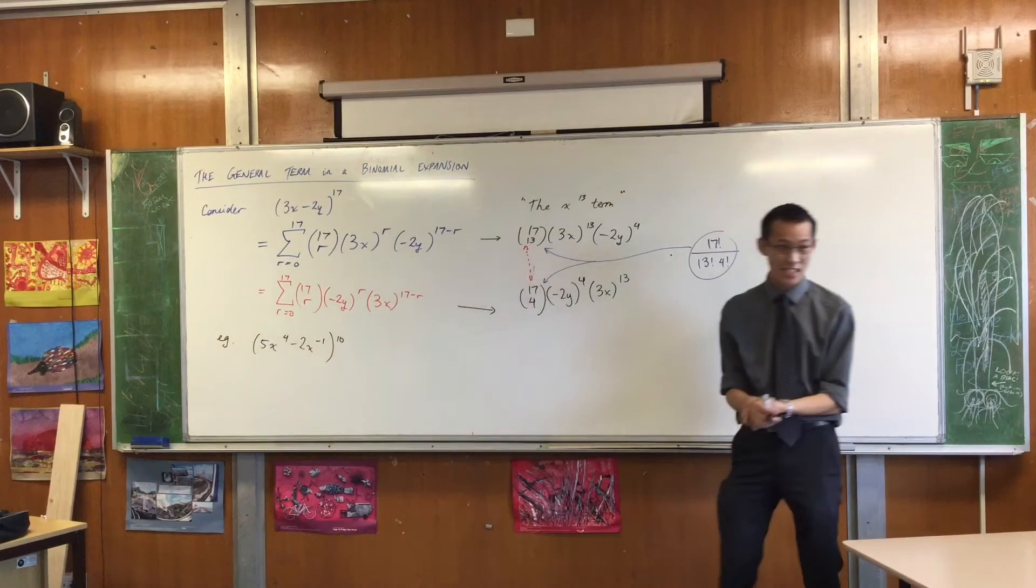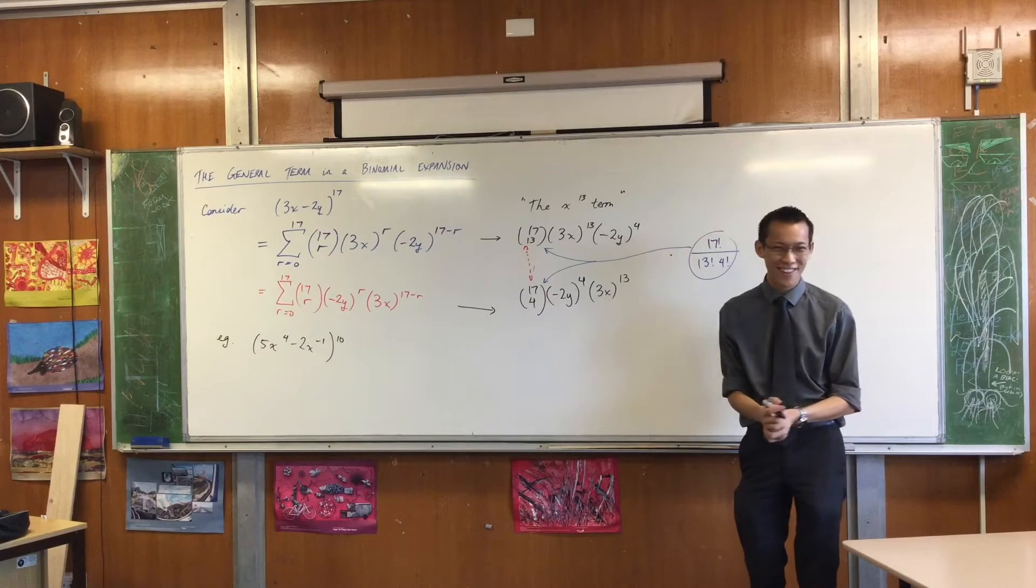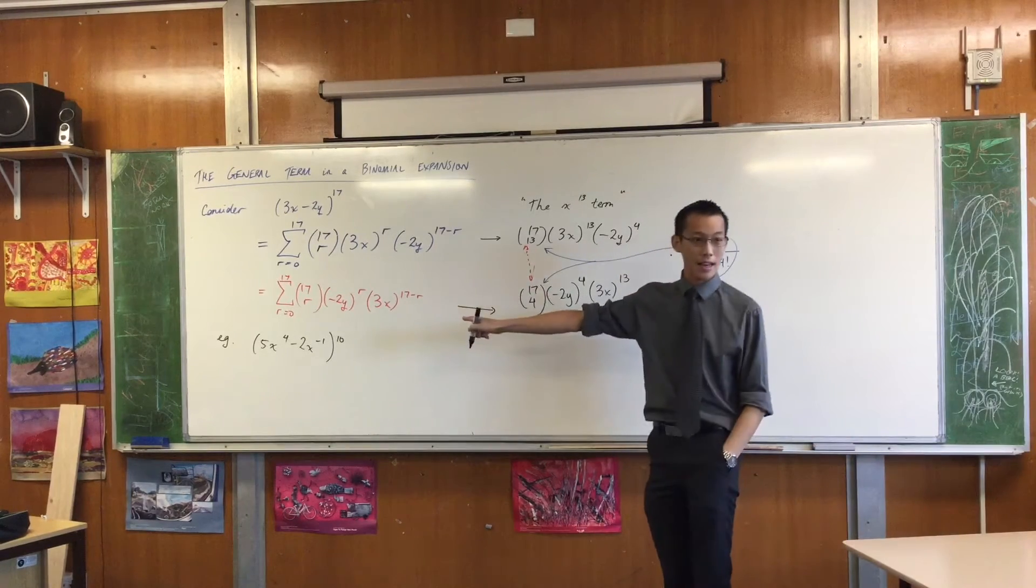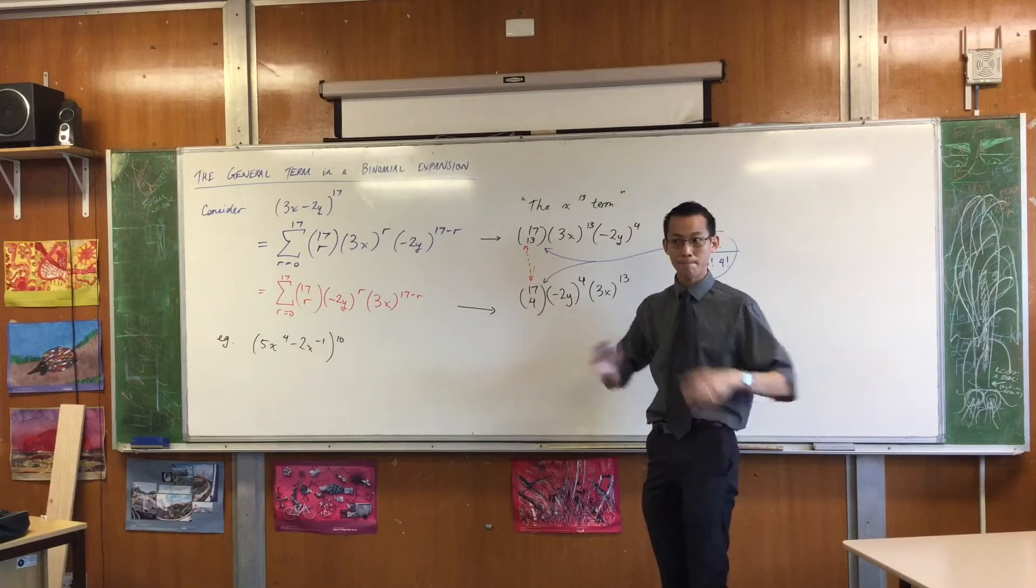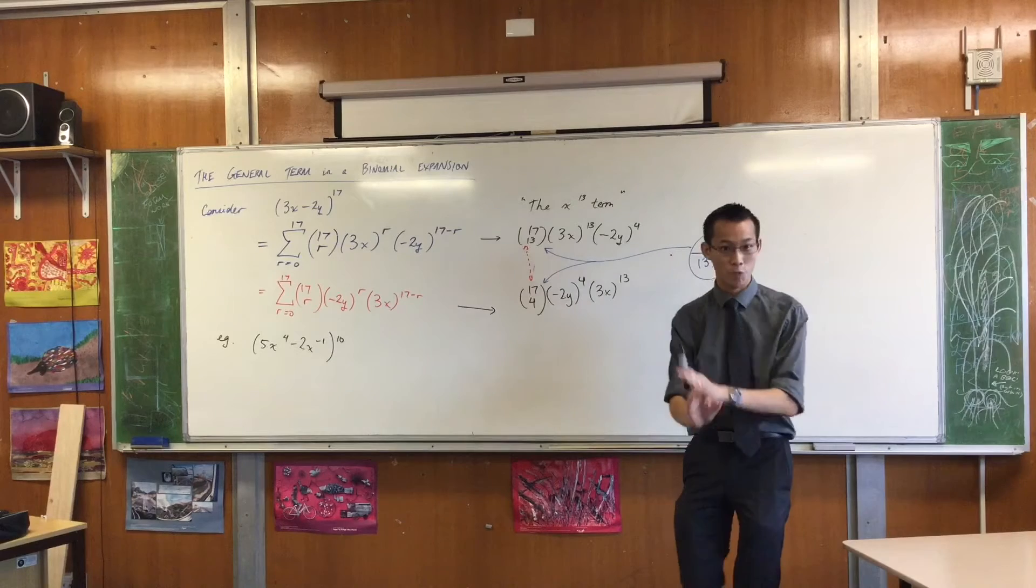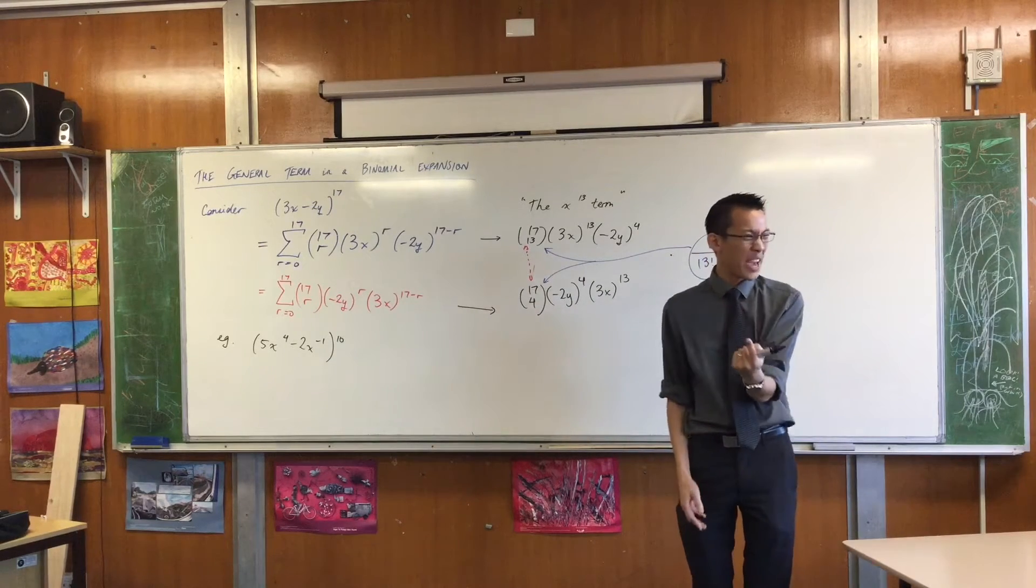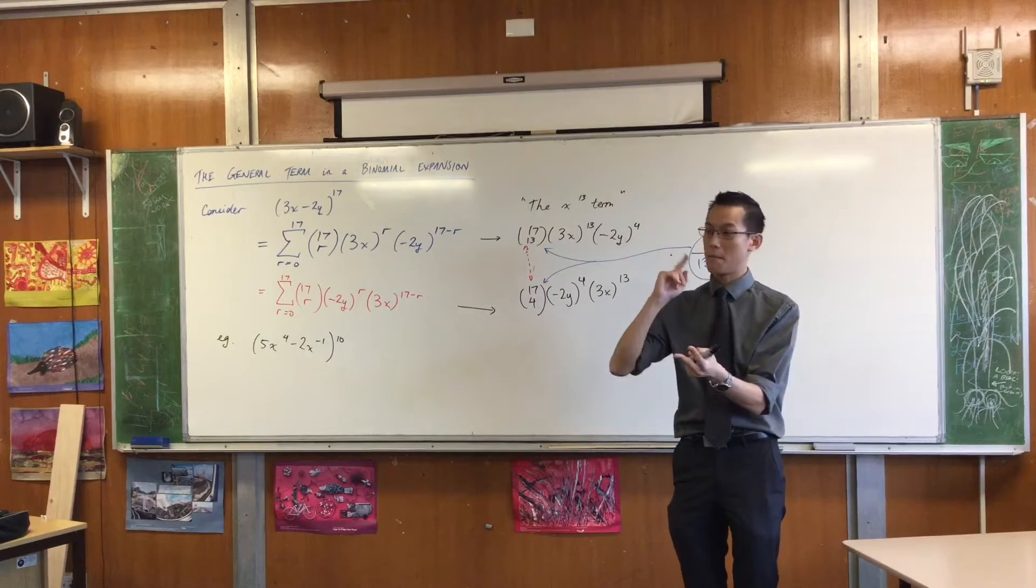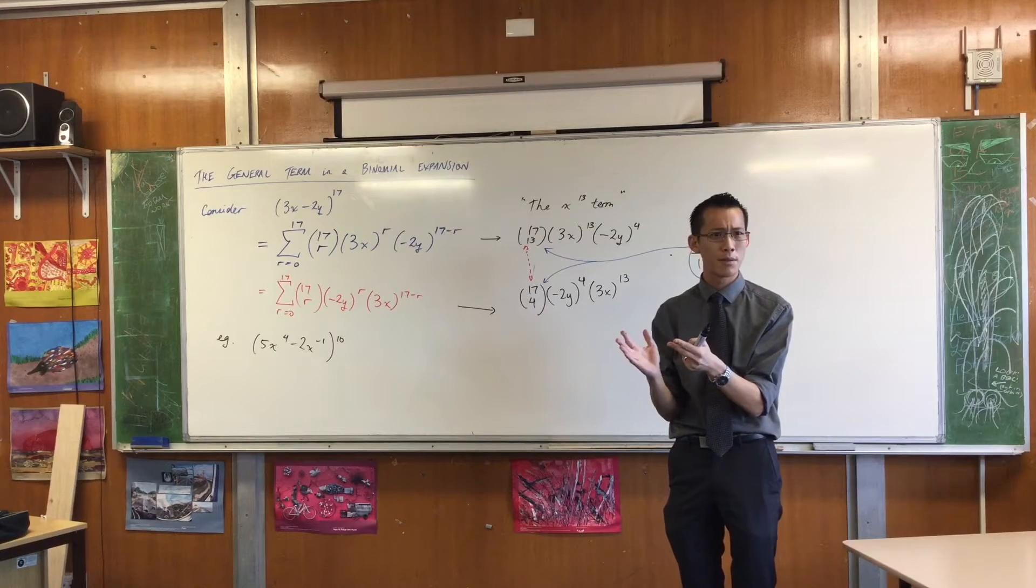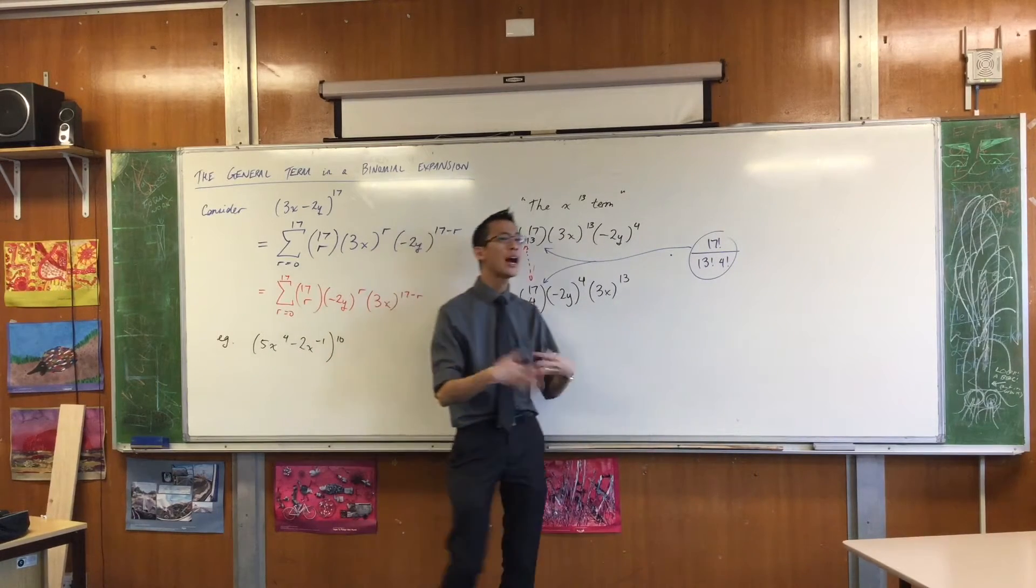Here, again, is a pretty messy expansion to the power of 10. Gross, I don't really want to write all of those out. The question they're posing to you is, which of these 11 terms has no x's in it? So they could either say it's a constant term, because if there are no x's, all you're left with is numbers, or they might say the term independent of x. In other words, all the x's from here and here have kind of cancelled each other out.